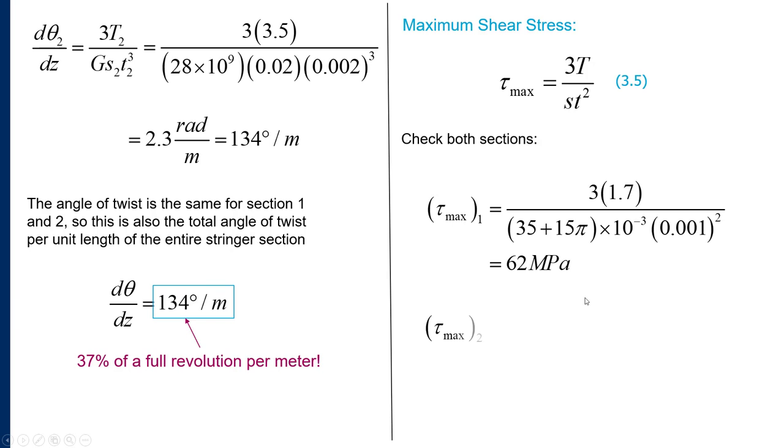Now if we look at section 2, we have the higher torque compensated by the higher thickness, but we still end up with a higher shear stress of 124 megapascals despite the higher thickness and shorter width. This is the maximum shear stress in the entire stiffener profile.